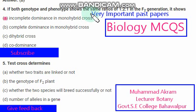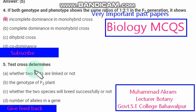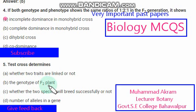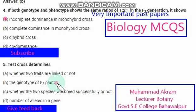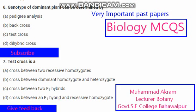Test cross determines — the options are: whether two traits are linked or not; the genotype of F2 plants; whether two species will breed successfully or not; number of alleles in a gene. The right option is option B, the genotype of F2 plants. Genotype of a dominant plant can be determined by: